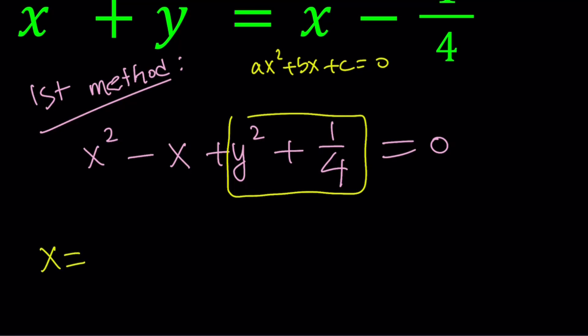Now we can solve this equation using the quadratic formula. Let's use the quadratic formula. Negative b plus minus the square root of b², which is one minus 4ac, four times a is one. So it's going to be y² plus 1/4. Then we divide it by two. Let's distribute the four.